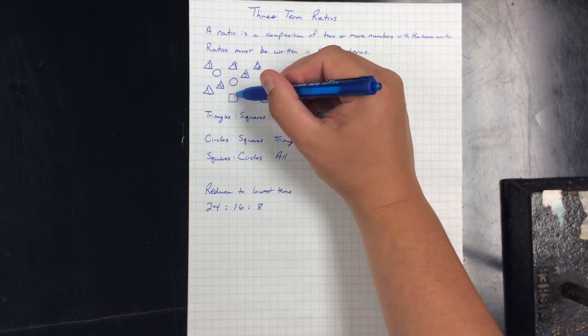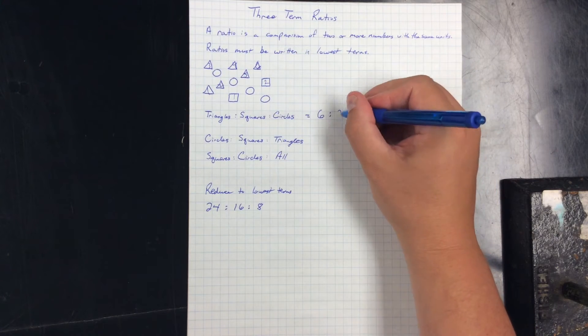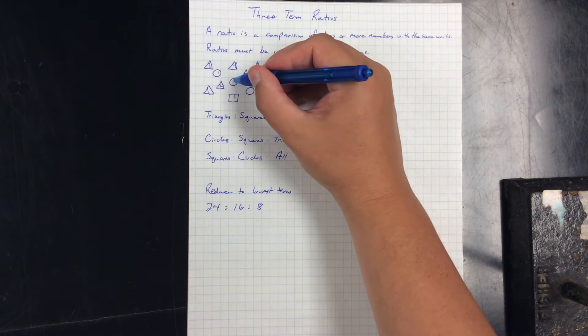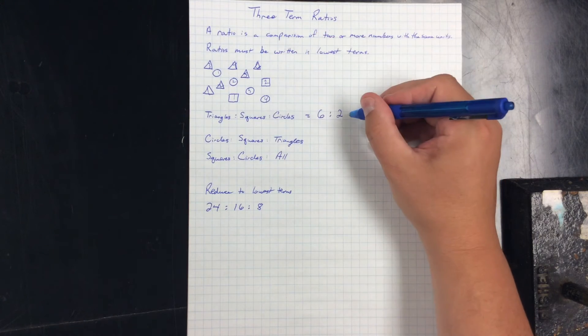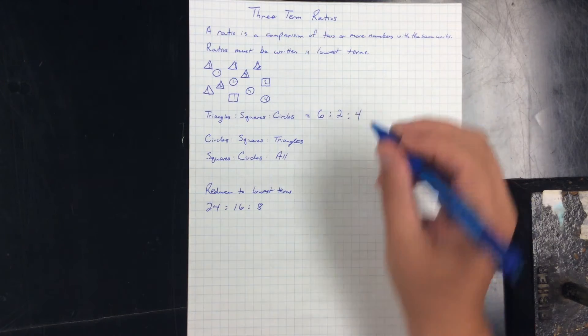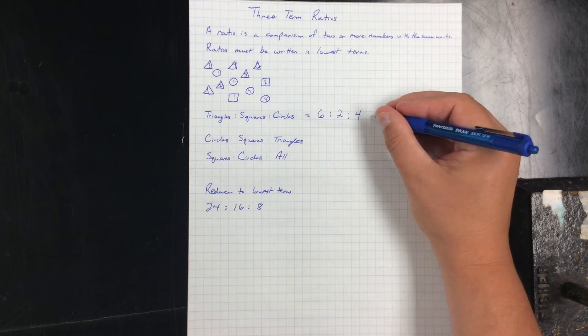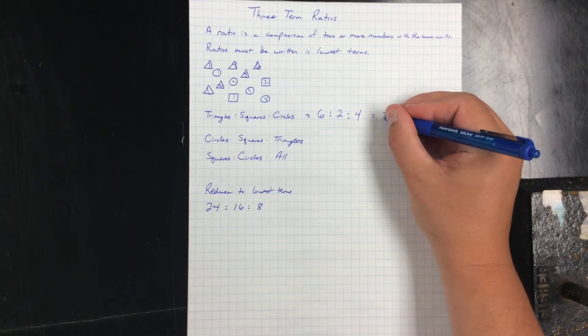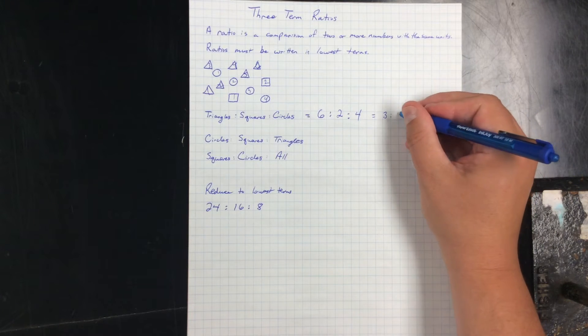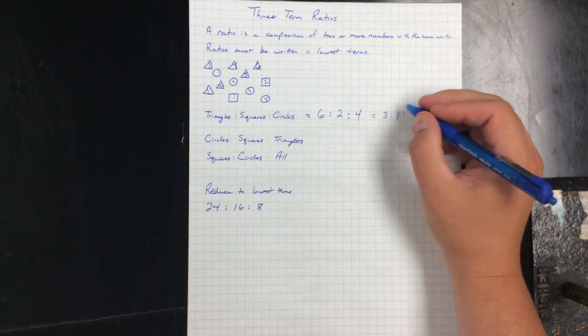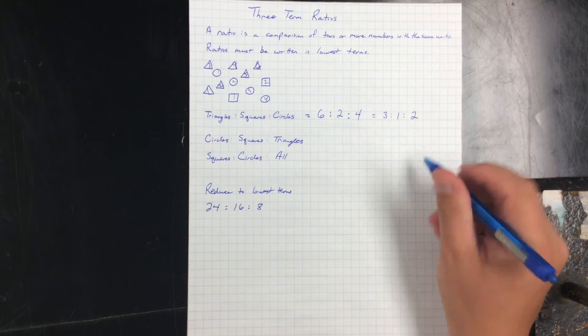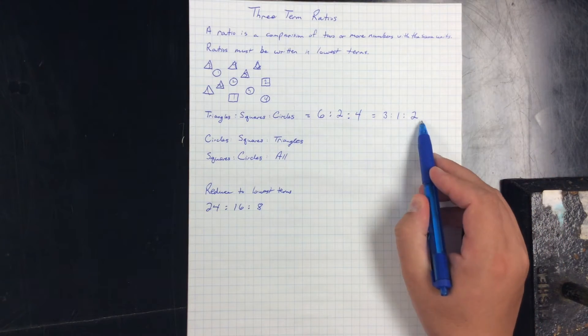To squares, one, two. To circles, one, two, three, four. So you get a ratio of six to two to four. Those are all even numbers, so I know it's not going to be in lowest terms. So I have to think of a factor that goes into all numbers, and that's two. Let's divide six by two, get three. Two by two to get one, and four by two to get two.